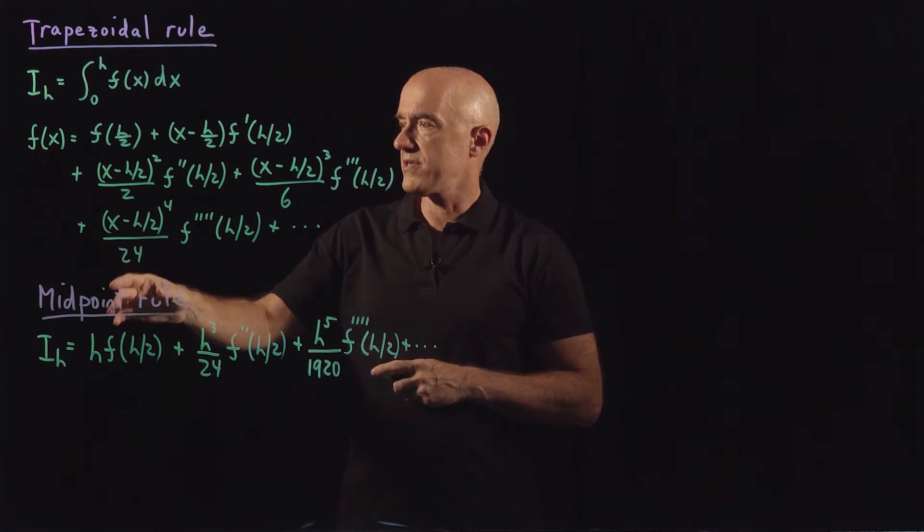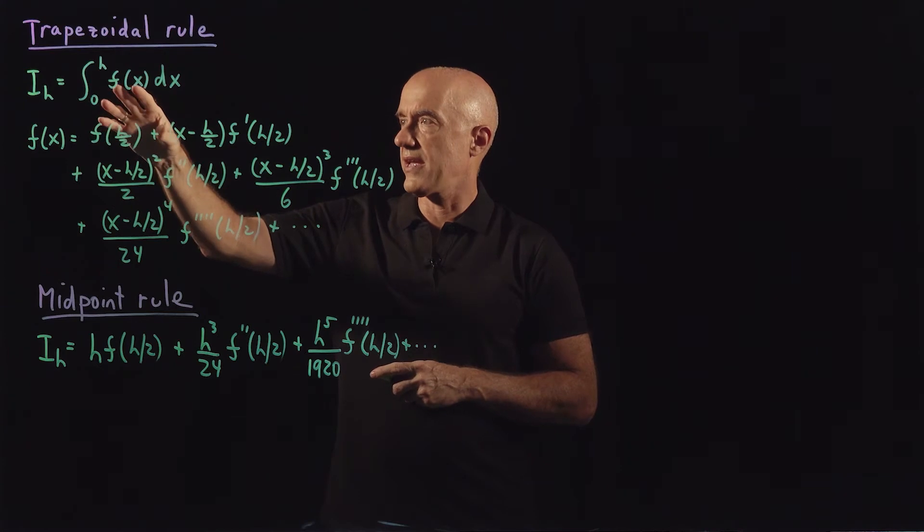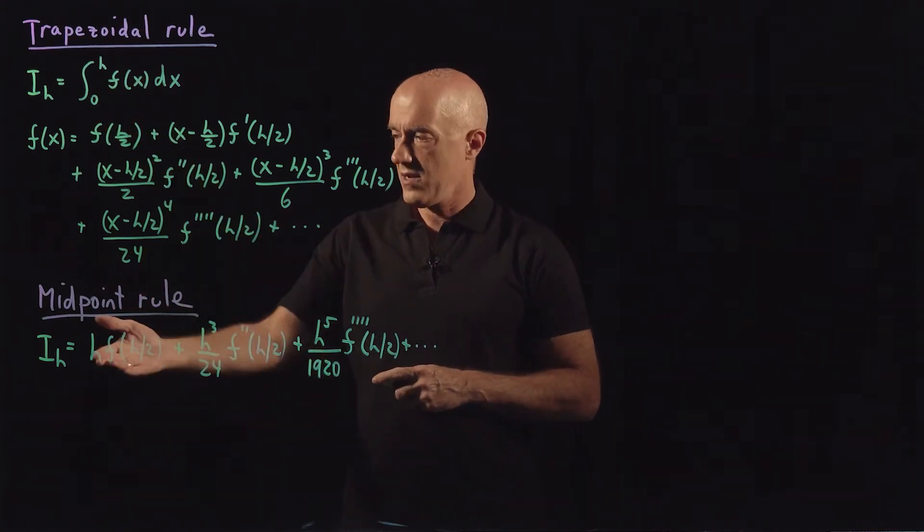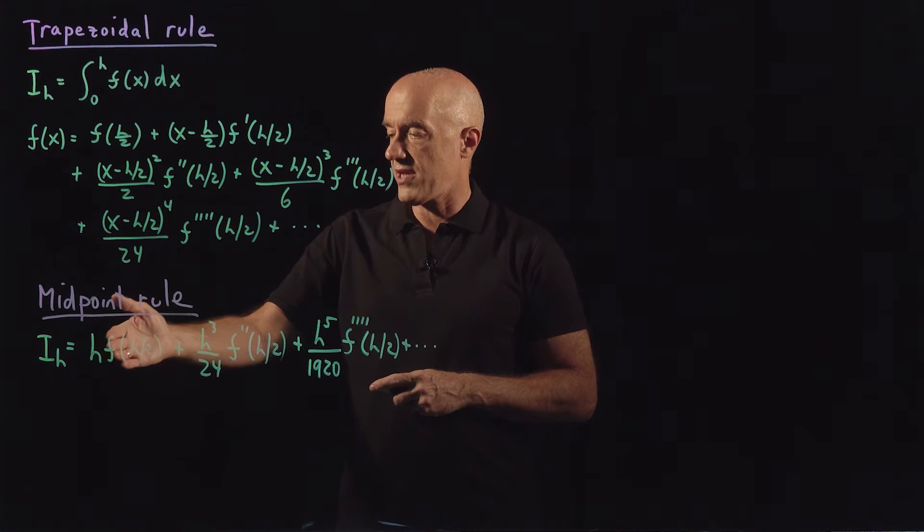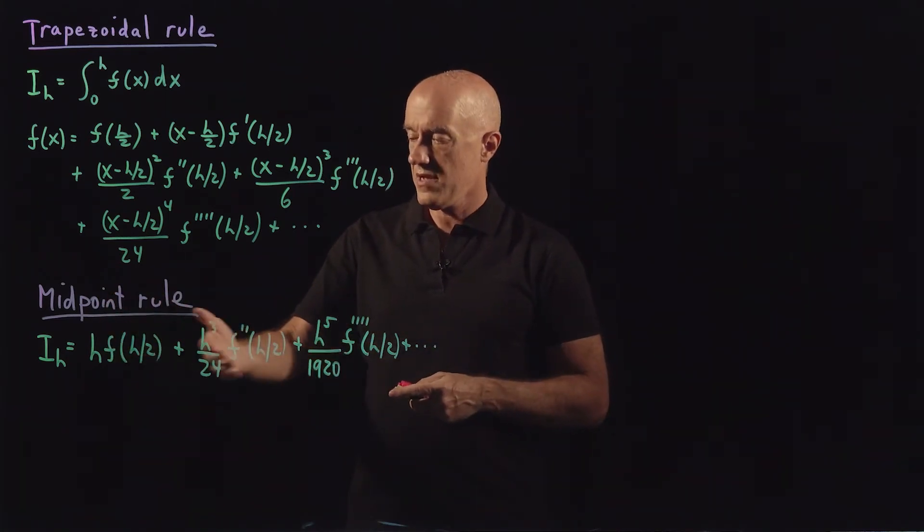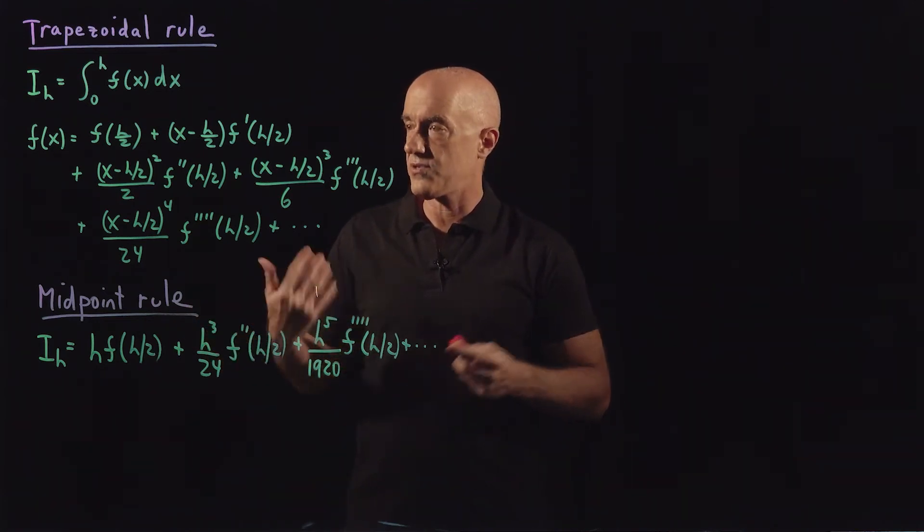Here I have the first five terms in the expansion. The midpoint rule was simply taking this f(x), substituting it into the integral, and then integrating. We got the midpoint rule here with i sub h equals h times f(h/2), the value of f at the midpoint of the interval, plus error terms proportional to h cubed and h to the fifth.